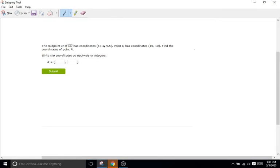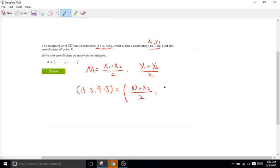Same thing as last time. They give us a midpoint of 13.5 and 9.5. And then they give us one of the end points, which is 10 comma 10. So our midpoint formula equals X1 plus X2 all over 2 comma Y1 plus Y2 over 2. So I'm going to write down our midpoint, which is going to be 13.5 comma 9.5, which is going to equal our equation of, we'll make this X1 and Y1. So X1 is going to be 10 plus X2 all over 2 comma Y1 is going to be 10 as well plus Y2 over 2.